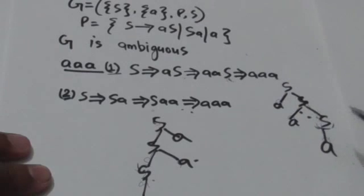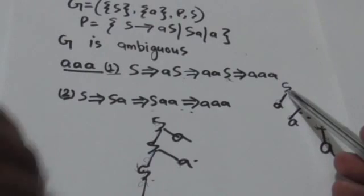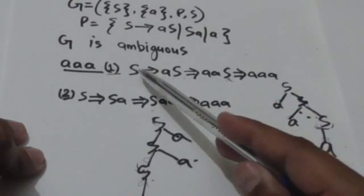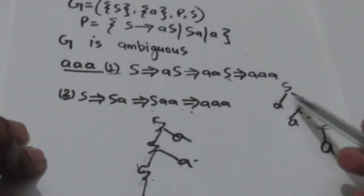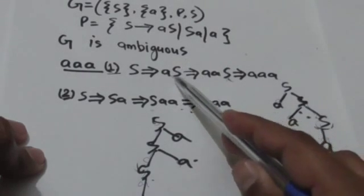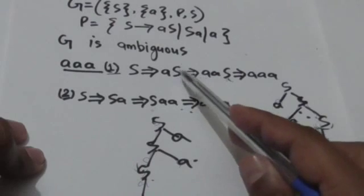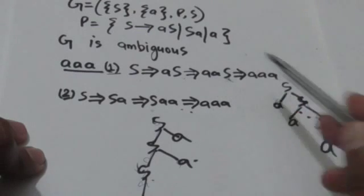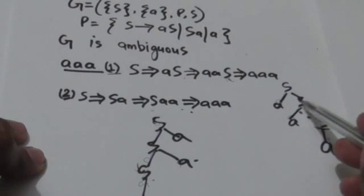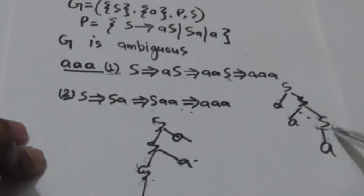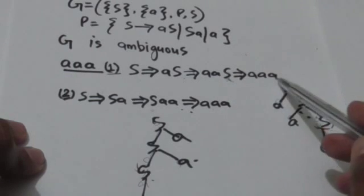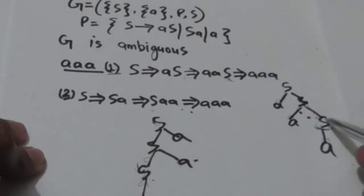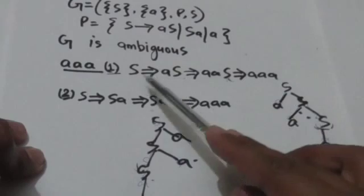This is the derivation tree corresponding to this leftmost derivation. S as the start symbol is the root node. First I applied the production rule S derives AS, so the children of the root node S will be A and S from left to right. Then for this S I applied the production rule S derives AS, and for the remaining S I applied S derives A, so the child of that S is A. This is the derivation tree which represents this leftmost derivation.